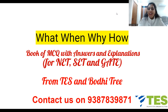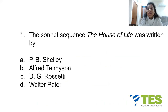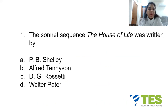Here is question number one. The sonnet sequence 'The House of Life' was written by — your options are: A. P.B. Shelley, B. Alfred Tennyson, C. D.G. Rossetti, or D. Walter Pater.